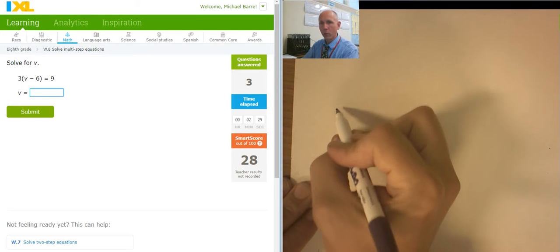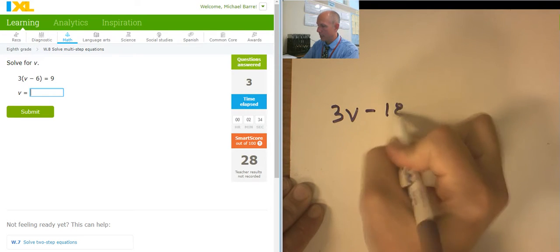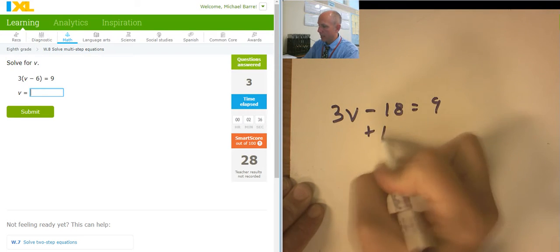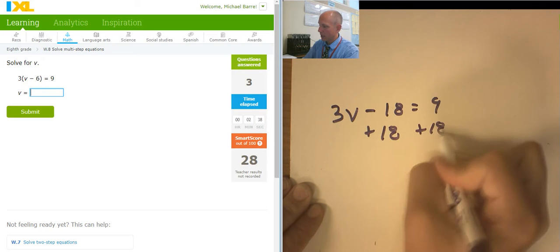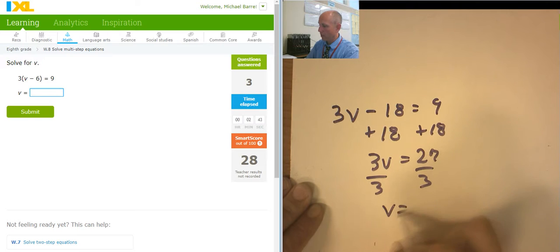Some distribution. I'm just going to write it down right away with the distribution. So this is 3v minus 18 equals 9. Adding 18 to both sides. 3v equals 27. Dividing both sides by 3. v equals 9.